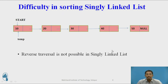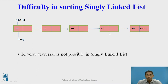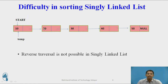Now, what are the difficulties that arise when we sort a singly linked list? The first problem with a singly linked list is that it consists of only one pointer, which points to the next node. So only forward direction traversal is possible. Reverse direction traversal is not possible, as it is in the case of a doubly linked list. There are multiple sorting algorithms, out of which selection sort and bubble sort we can apply for sorting a singly linked list.